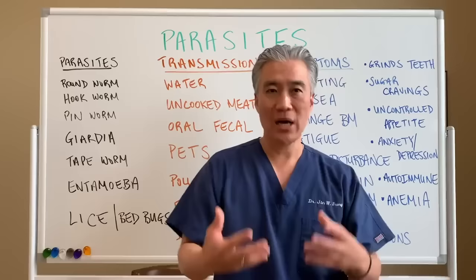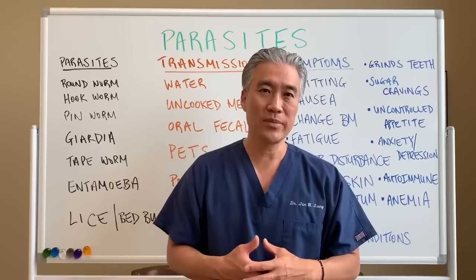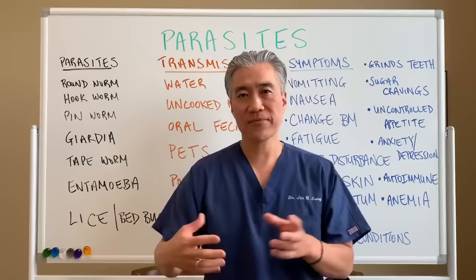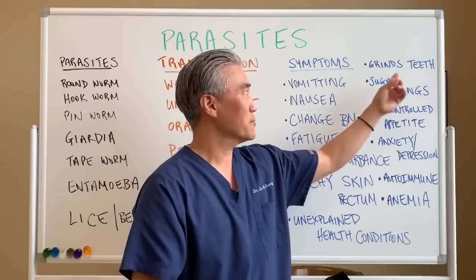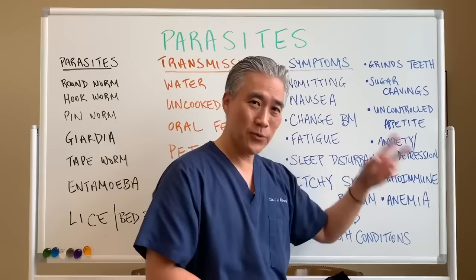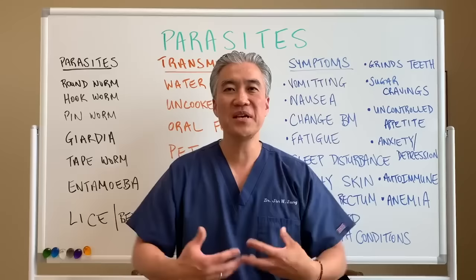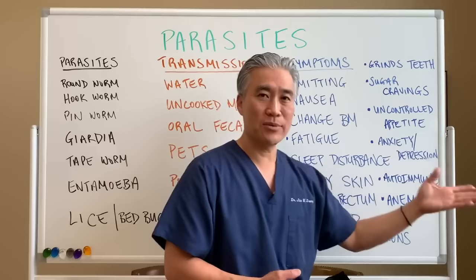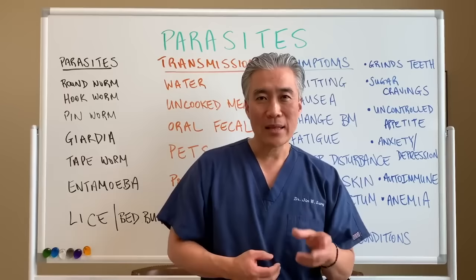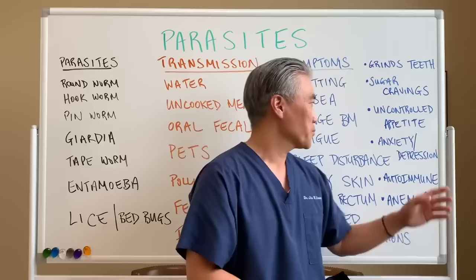Unexplained health conditions like fibromyalgia and pain can be inflammatory responses caused by infection. People who suddenly start grinding their teeth at night. Sugar cravings, uncontrolled appetite, or constant hunger — parasites feed off of you, making you calorie deficient, causing you to crave sugar and food. Anxiety and depression — things like Lyme and other infections create inflammatory responses affecting the brain. Autoimmune disease can be triggered by parasites, which create a cytokine storm causing the immune system to attack the thyroid or joints like rheumatoid arthritis.